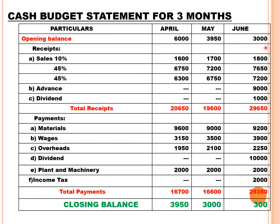Rs. 3,000 carried forward as opening balance for June. Sales receipts: Rs. 1,800 cash, Rs. 7,650 from May credit, Rs. 7,200 from April credit. Advance received for sale of vehicle: Rs. 9,000; dividend on investment: Rs. 1,000. Total receipts: Rs. 29,650. Payments: material Rs. 9,200 (April's), wages and overheads as per working notes, dividend on preference shares Rs. 10,000 (2 lakh × 5%), plant installment Rs. 2,000, income tax Rs. 2,000. Total payments: Rs. 29,350. Closing balance for June: Rs. 300. Any doubts, kindly contact through WhatsApp. Thank you.